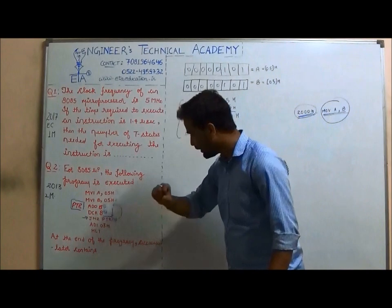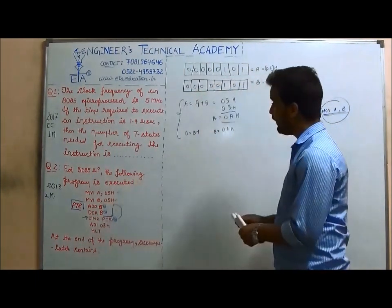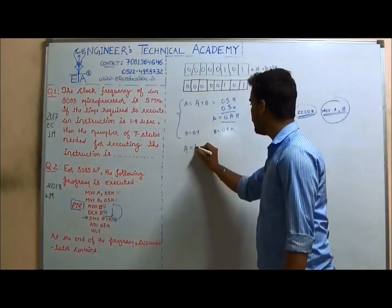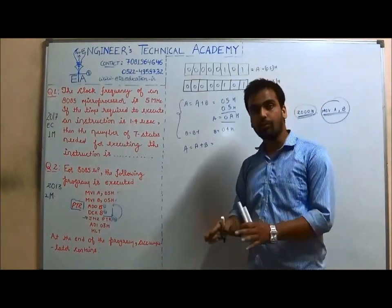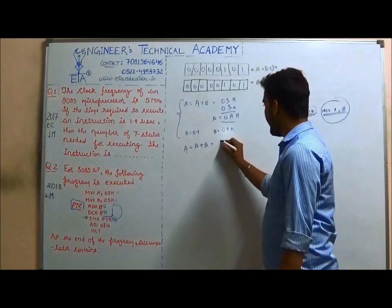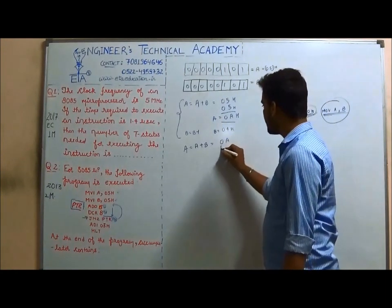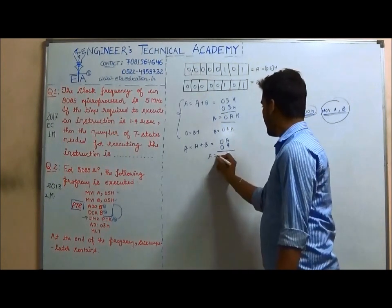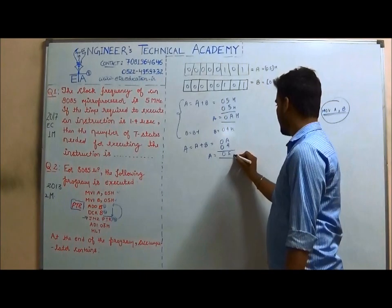So we go back to ADD B and add B into A again. A = A + B. The content of B has been decreased by 1, so the value of A is 0AH and value of B is 04H.